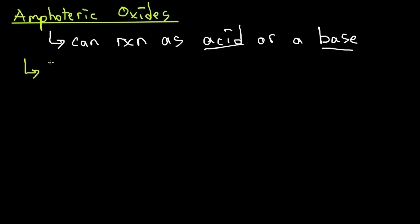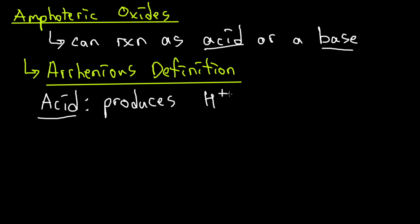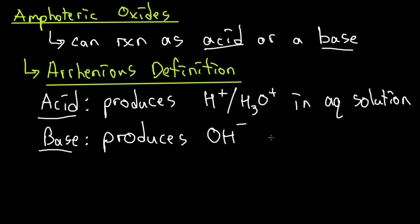First, we will discuss the Arrhenius definition of acid and bases. According to the Arrhenius definition, an acid is going to be a substance that produces a proton or a hydronium H3O+ compound in aqueous solution. And the definition of a base, according to Arrhenius, is a compound that produces hydroxide ions in aqueous solutions. Now Arrhenius definition is no longer used in modern science.